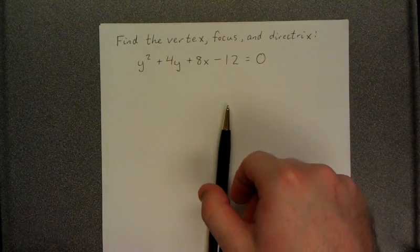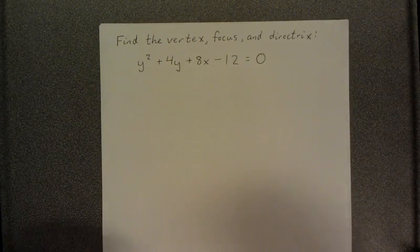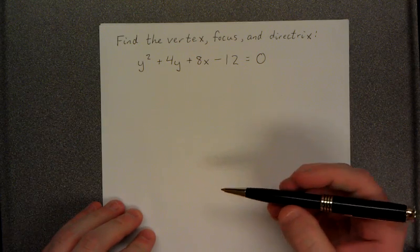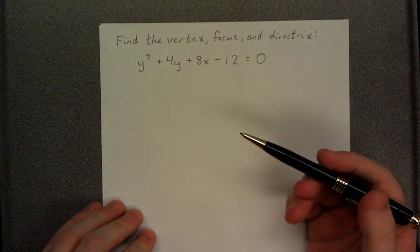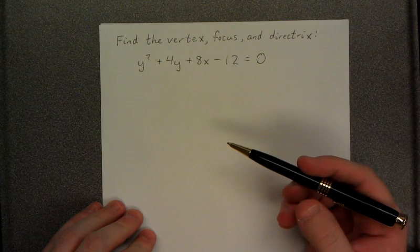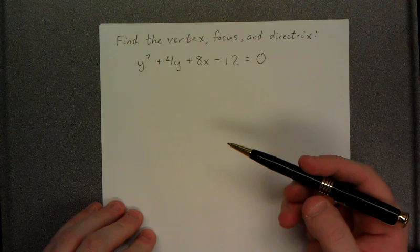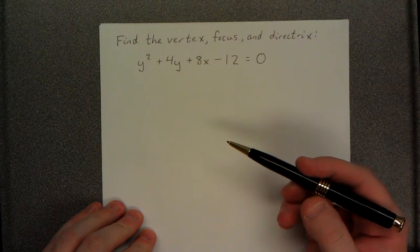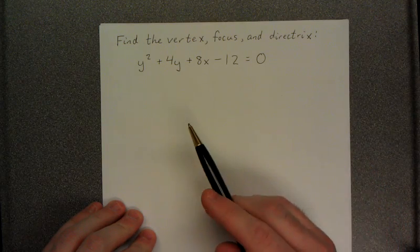Good day, everybody. This is Professor Friday from Macomb Community College, and today we're going to be working with some conic sections. The problem for us today is to find the vertex, the focus, and the directrix of the parabola with the equation y squared plus 4y plus 8x minus 12 is equal to 0.